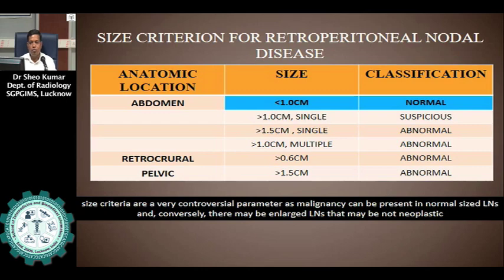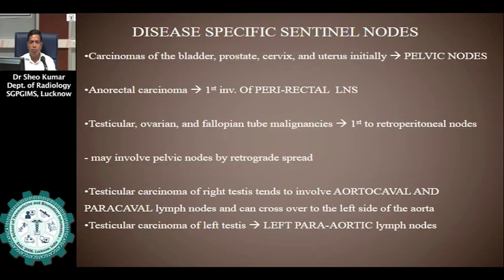For retrocrural nodes, if the size is more than 6 mm, it is abnormal. In the pelvic group of lymph nodes, if nodes are more than 1.5 cm, they are considered abnormal. However, size criteria are a very controversial parameter, as malignancy can be present in a normal-size lymph node and, conversely, an enlarged lymph node may not represent neoplastic invasion.